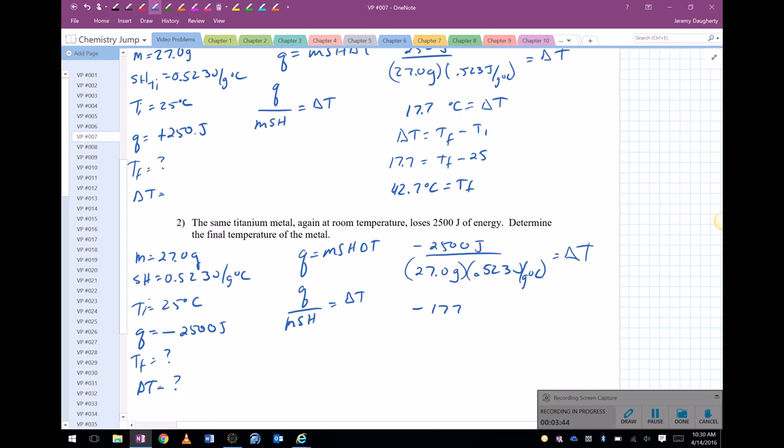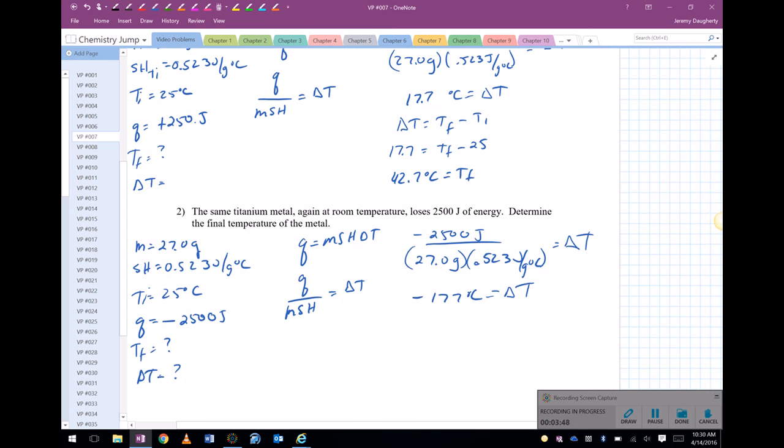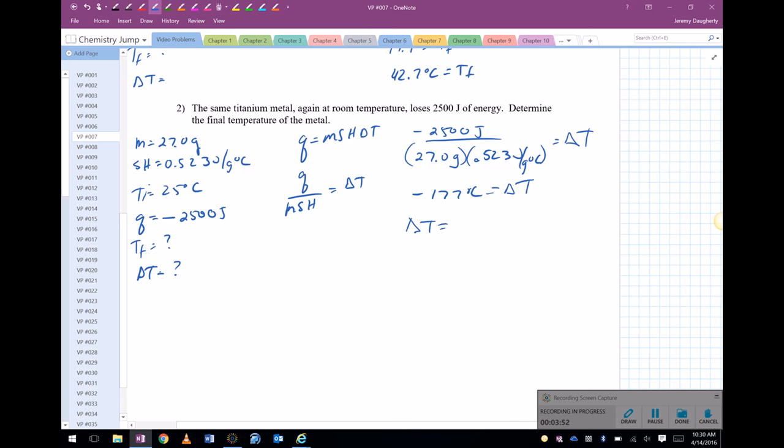So we get a drop of 177 degrees Celsius. But again I'm looking for the final temperature, so delta T is equal to T final minus T initial. Negative 177. So I'm going to add 25 to both sides. And I get a value of negative 152 degrees Celsius is the final temperature.